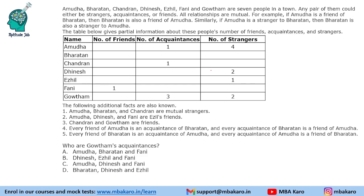Any pair of them could be either strangers, acquaintances, or friends. All relationships are mutual. For example, if Amudha is a friend of Bharatan, then Bharatan is also a friend of Amudha. Similarly, if Amudha is a stranger to Bharatan, then Bharatan is also a stranger to Amudha. So basically, whatever is the relation between X and Y will be the relation between Y and X.